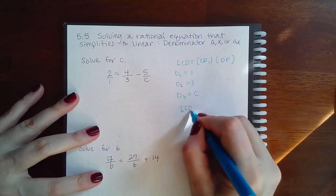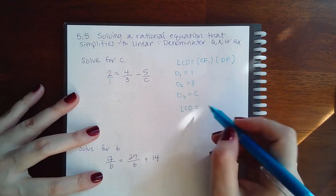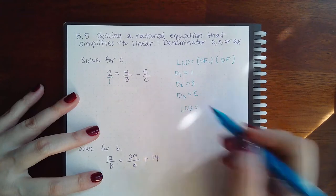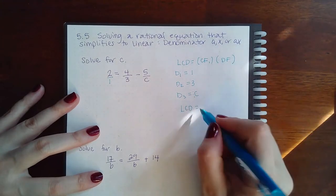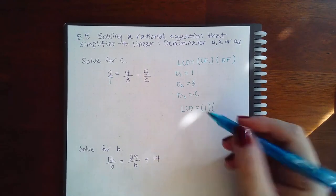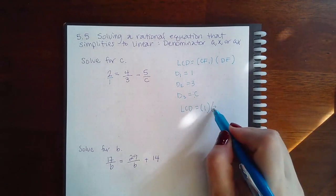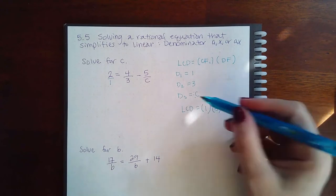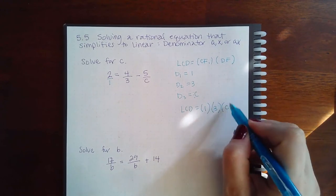Now, if you notice, they don't really have anything in common, but you could put a 1 here, and now these two have a 1 in common. What do they have different? There's a 3 there that isn't in the other denominators, and there's a C there that isn't in the other denominators.